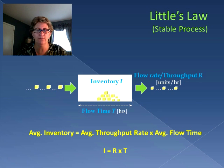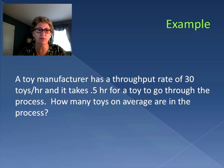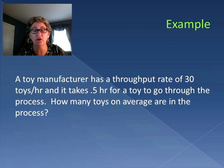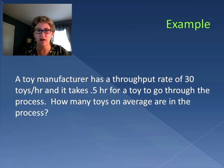Let's do a simple example. A toy manufacturer has a throughput rate of 30 toys per hour and it takes half an hour for a toy to go through the process. How many toys on average are in the process? Pause the video and take a moment to solve it.